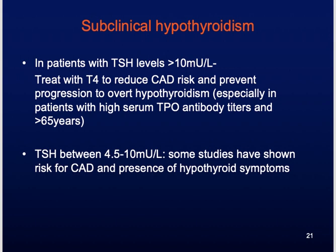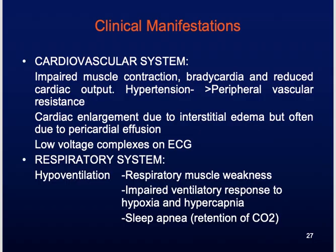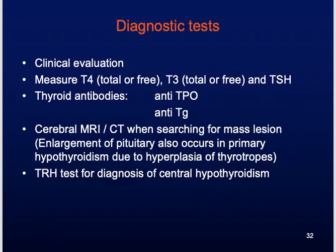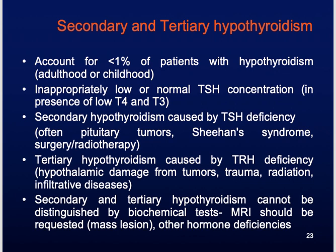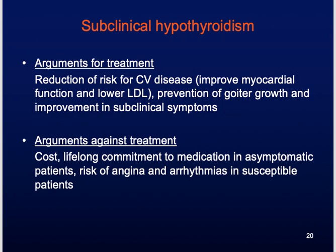In females, hypothyroidism can cause menorrhagia — that is, an increased amount of menstrual bleeding. In males, it can cause impotence. On examination, patients' faces appear puffy due to weight gain, and you will find facial or periorbital edema. When you feel their skin, it will look dry and rough.